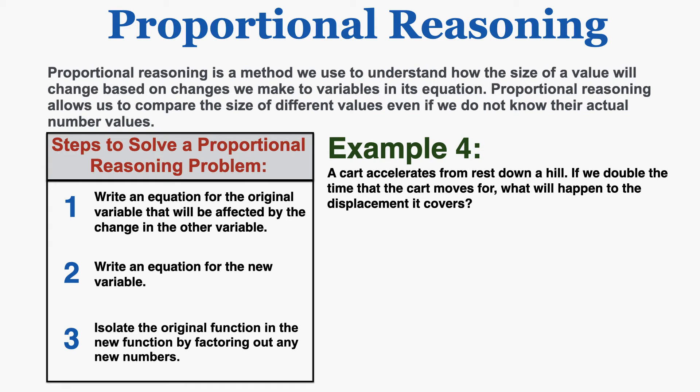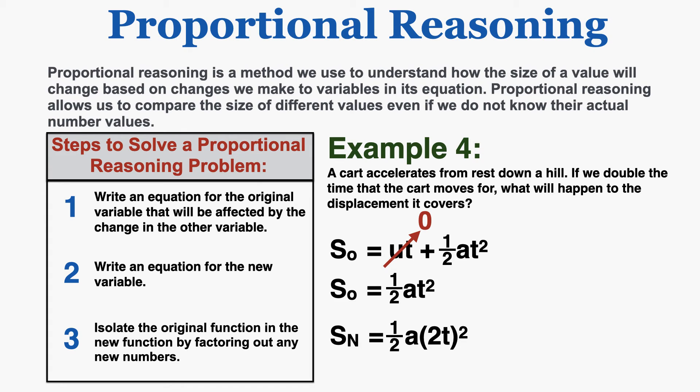In example 4, a cart accelerates from rest down a hill. If we double the time that the cart moves for, what will happen to the displacement? Since the cart starts from rest, initial velocity equals zero, so displacement equals one half times acceleration times time squared. The new displacement is one half times acceleration times (2t) squared. Carrying out the square gives one half times a times 4t squared, which equals 4 times one half at squared — equal to 4 times the original displacement. So if you let something travel down a hill twice as long, it will travel four times as far.